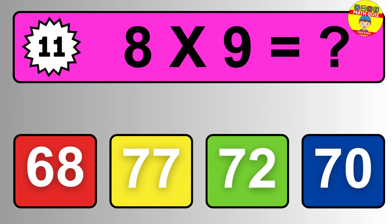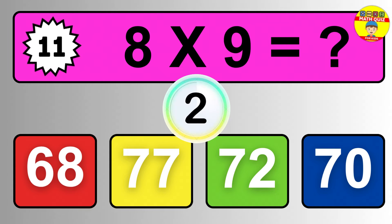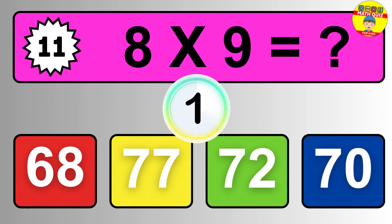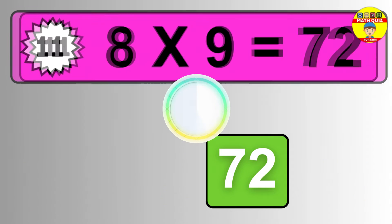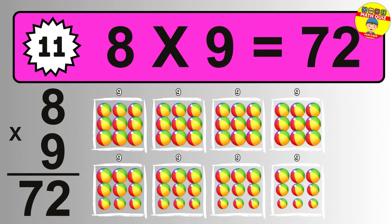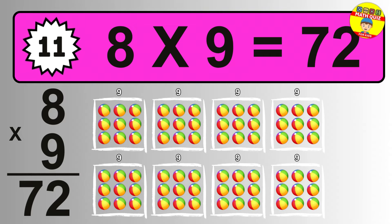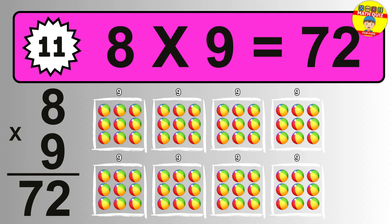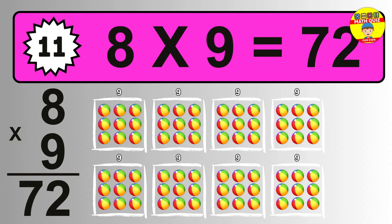Question eleven. Eight times nine equals what? The answer is eight times nine is seventy-two. To calculate, we have eight groups with nine balls each one. So how many balls do we have? Seventy-two balls.